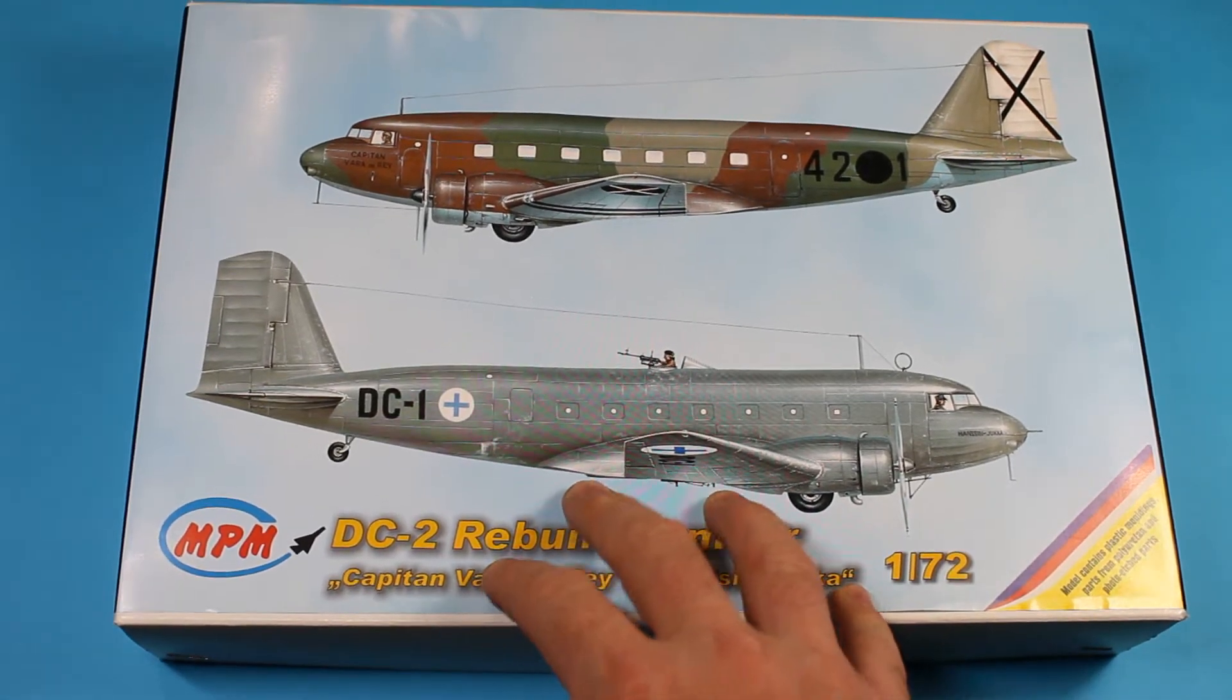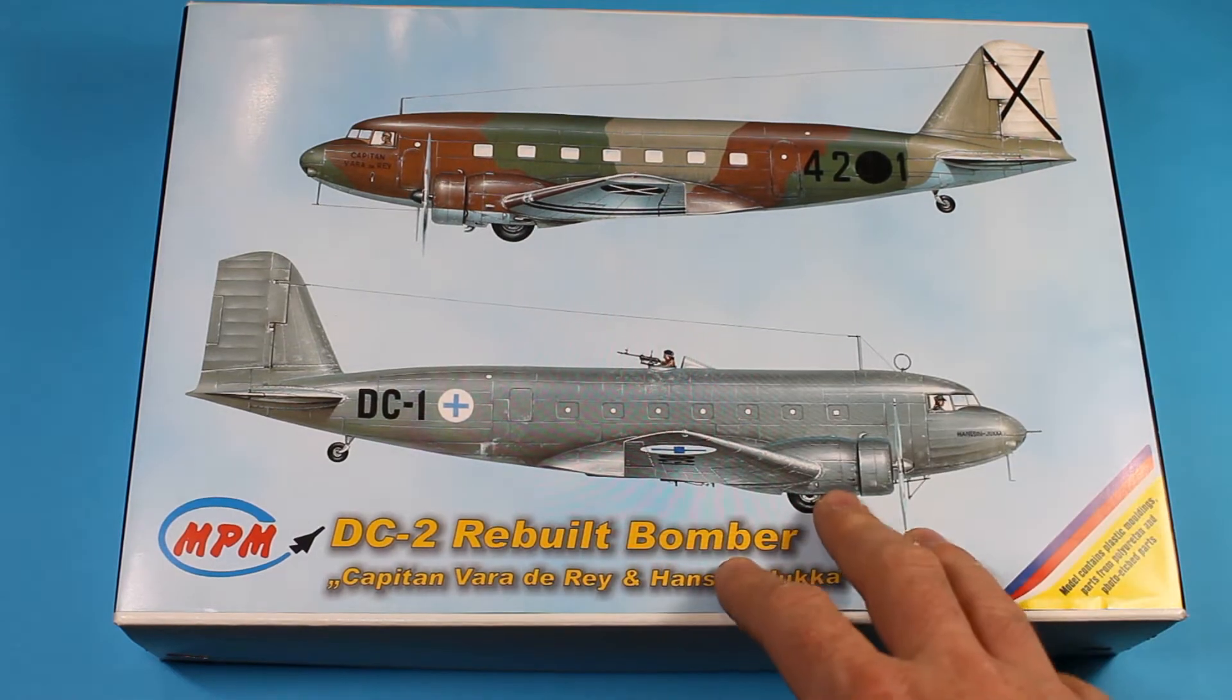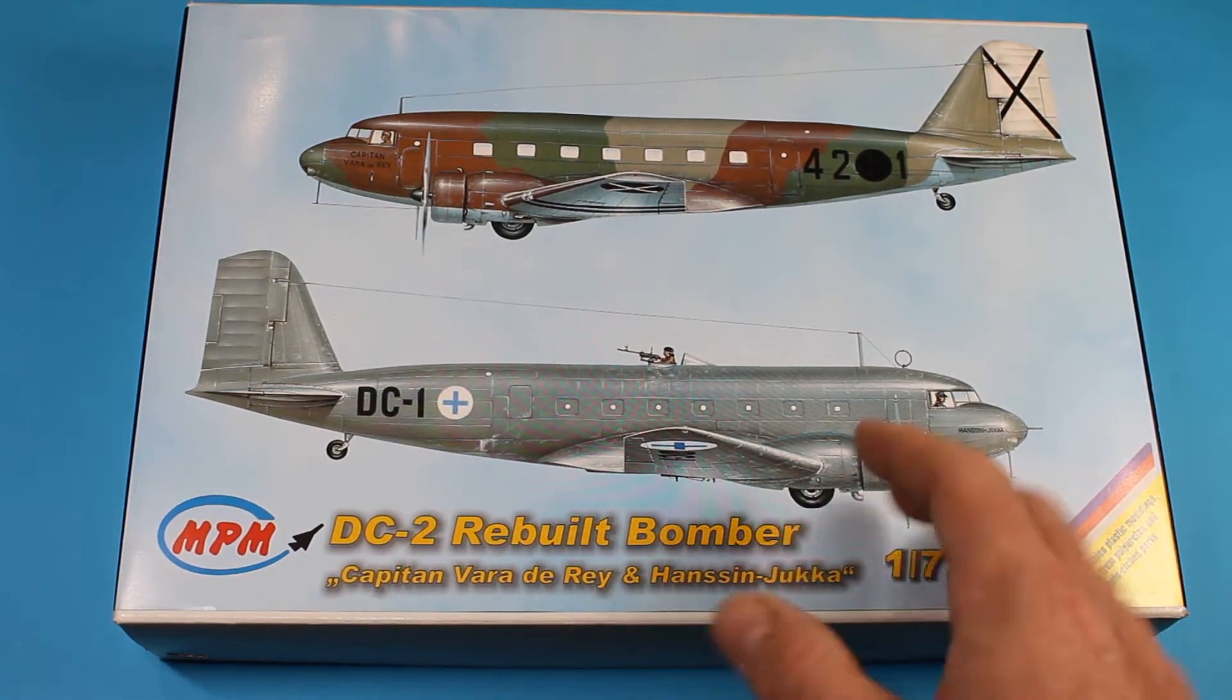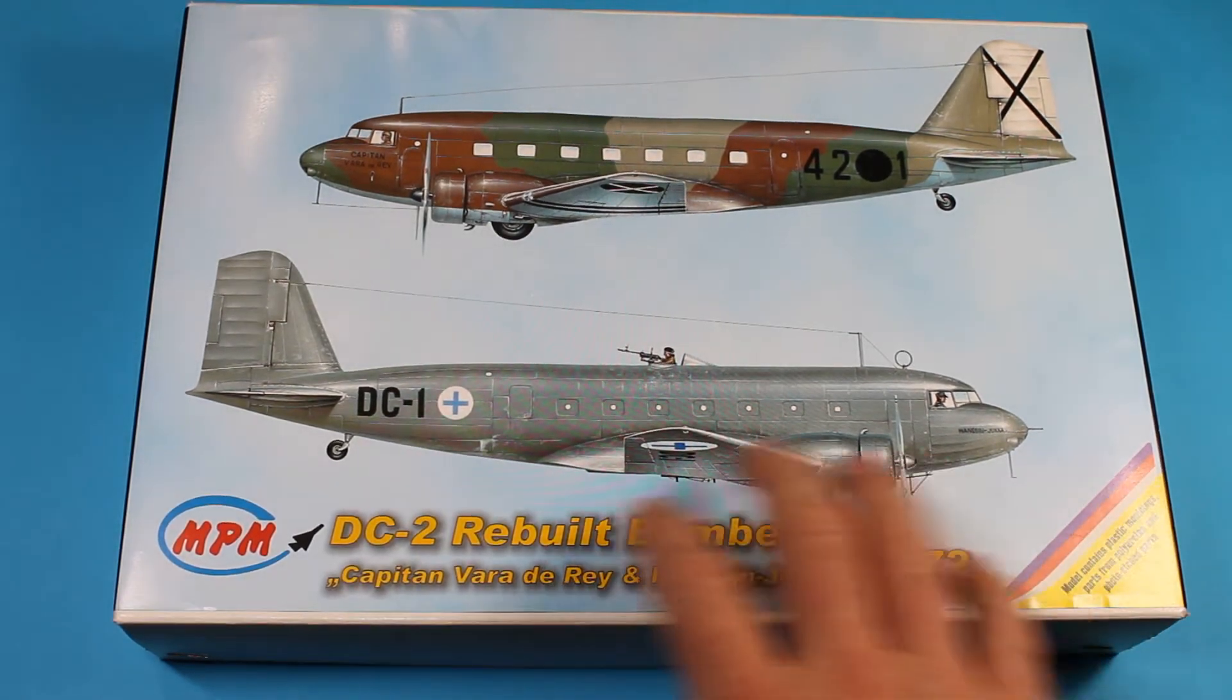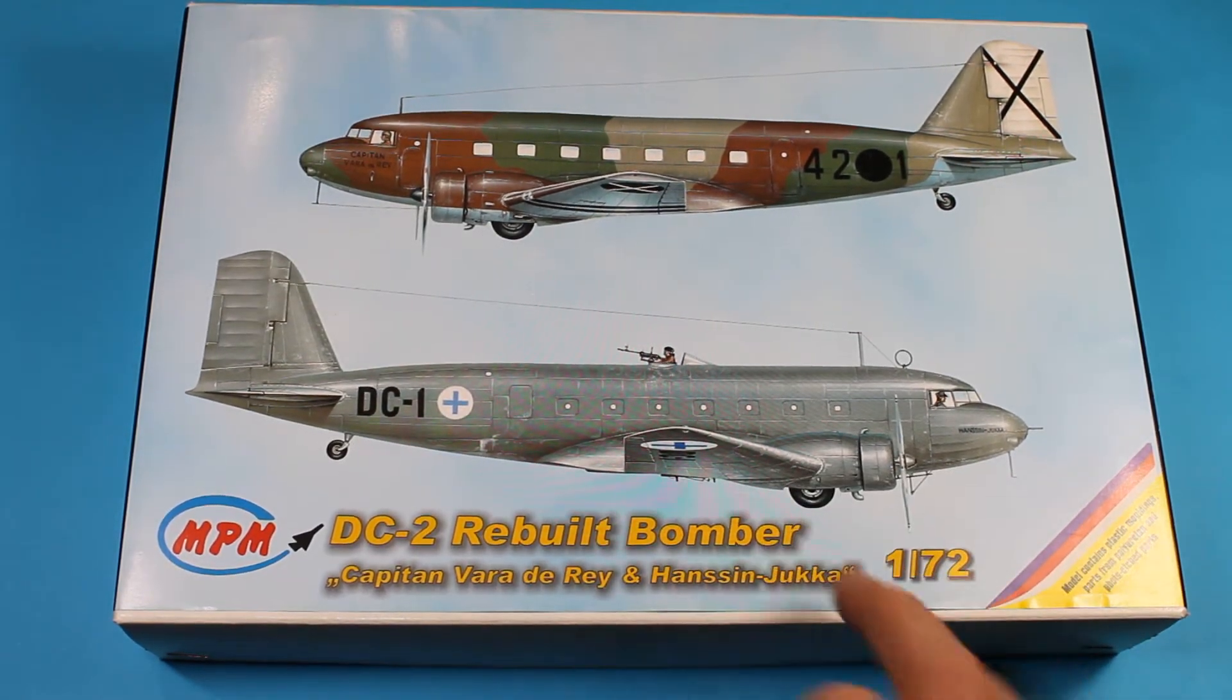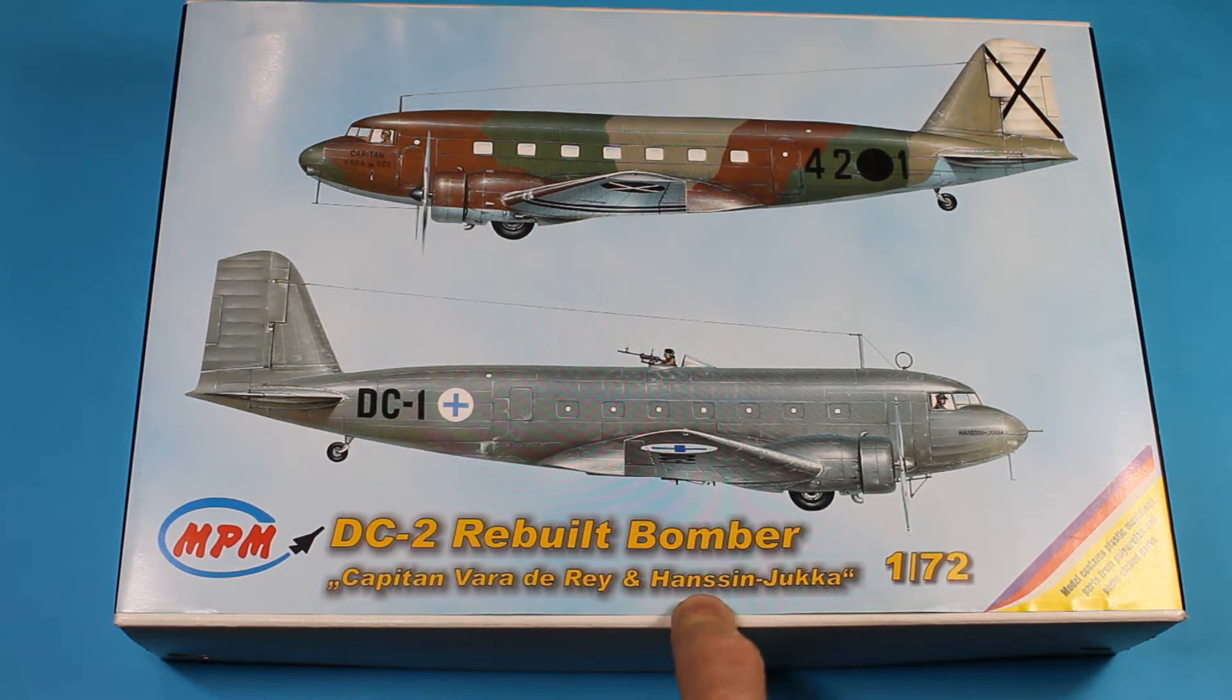The one that you see used in the D-Day landings and all over the world for a huge amount of time, even to this current day, is the DC-3. Slightly different, not a huge amount of variation between the DC-2 and the DC-3. This is pretty much the only kit in this scale which makes any sense.